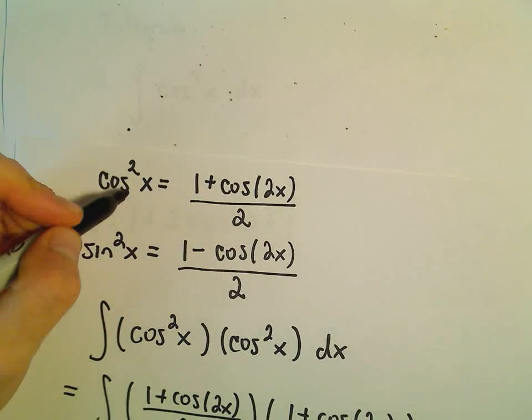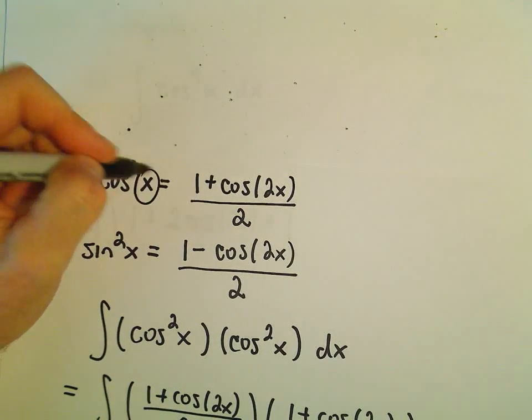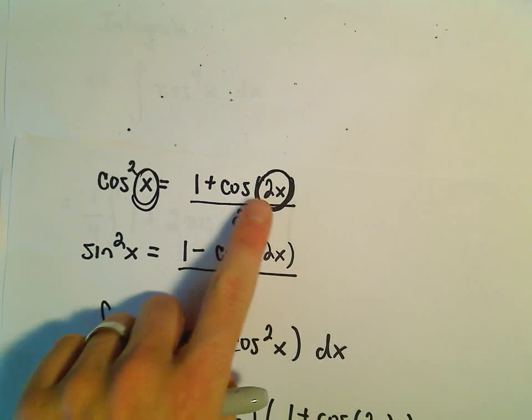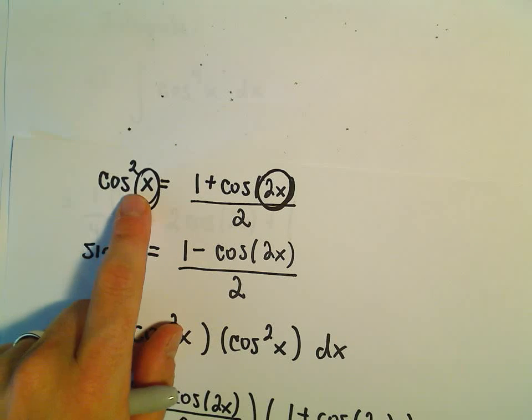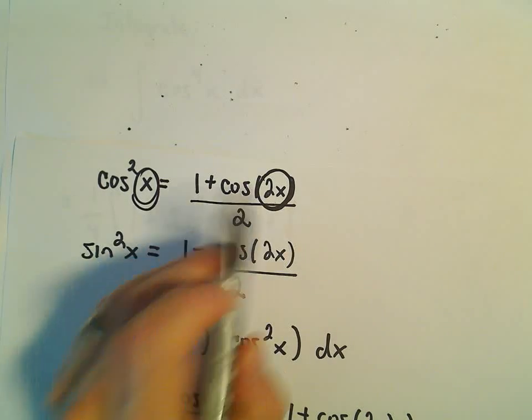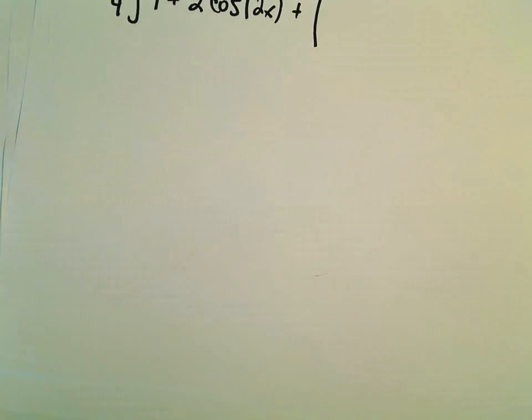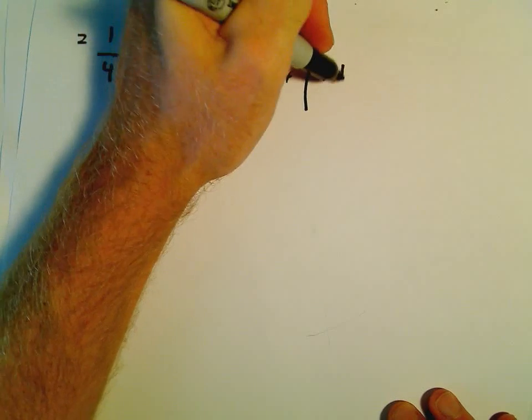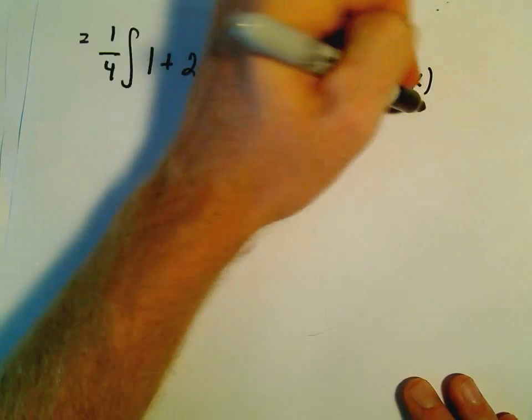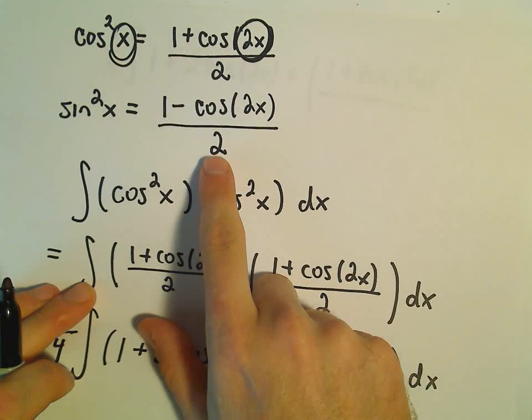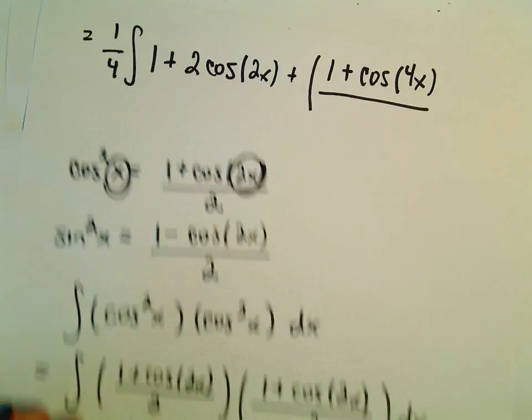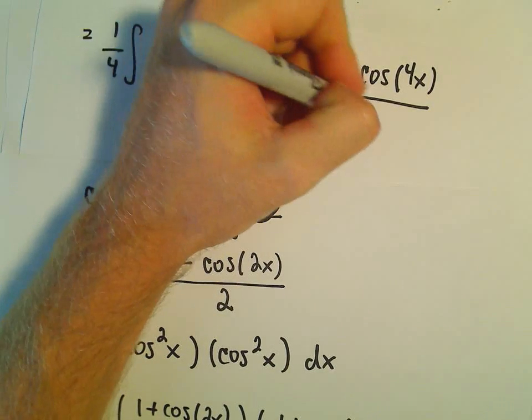So notice when we had just cosine squared x, the thing that's inside the parentheses gets doubled. If you start with x, well now you've got 2x. So if we start with 2x and we double that, we're going to end up with a cosine of 4x. So really we have 1 plus cosine of 4x. Again, it's still over 2. The only thing that changes is what's inside the parentheses. So 1 plus cosine of 4x over 2. All of that we're integrating with respect to x.